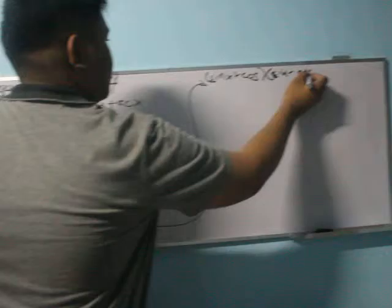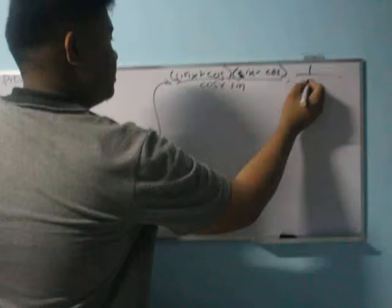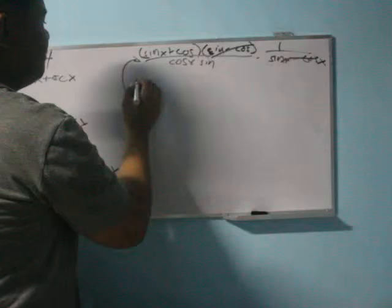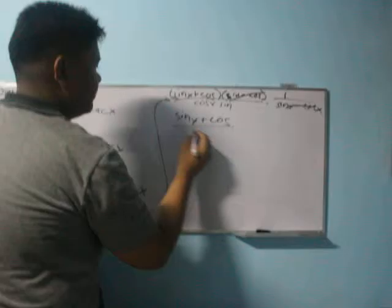And we're going to multiply it by the reciprocal of the denominator, which is 1 over sin x minus cos x. So the outcome would become sin x plus cos x over cos x sin x.